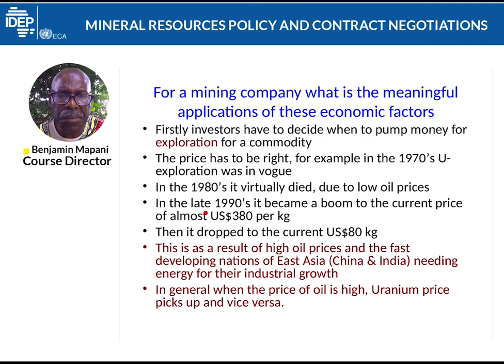In the 1990s, uranium became a commodity which was in demand. The price went as high as US $380 per kg, and then it dropped to about $8 per kg. It has dropped even lower because of political events around uranium, such as the Fukushima power station which was destroyed in a tsunami.